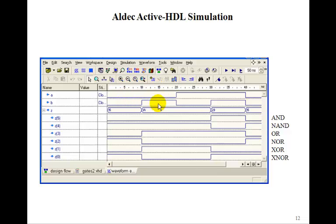So A and B go 0, 0, 0, 1, 1, 0, 1, 1. And the output for the AND gate is high only if both inputs are high. NAND is just the opposite of AND. The OR gate is 0 only if both inputs are 0, 1 otherwise. NOR is just the opposite. And the exclusive OR was 1 if A is 1 and B is 0 or if B is 1 and A is 0. Otherwise, it's 0. And the XNOR is just the opposite. So the simulation works.